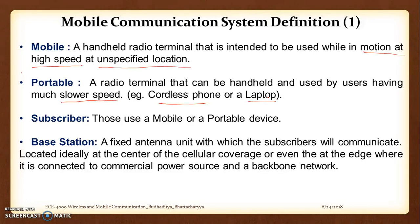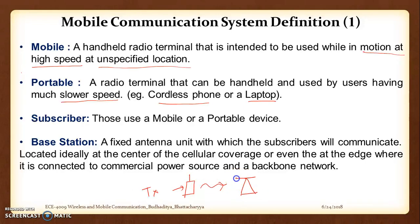The subscriber is the person who is using the device. Finally, a base station is a fixed antenna unit with which the subscriber communicates. You have a mobile terminal as a transmitter trying to communicate, and there is a base station mounted on top of some building. This is quite a familiar scene in urban areas — you can observe base stations mounted on top of buildings.